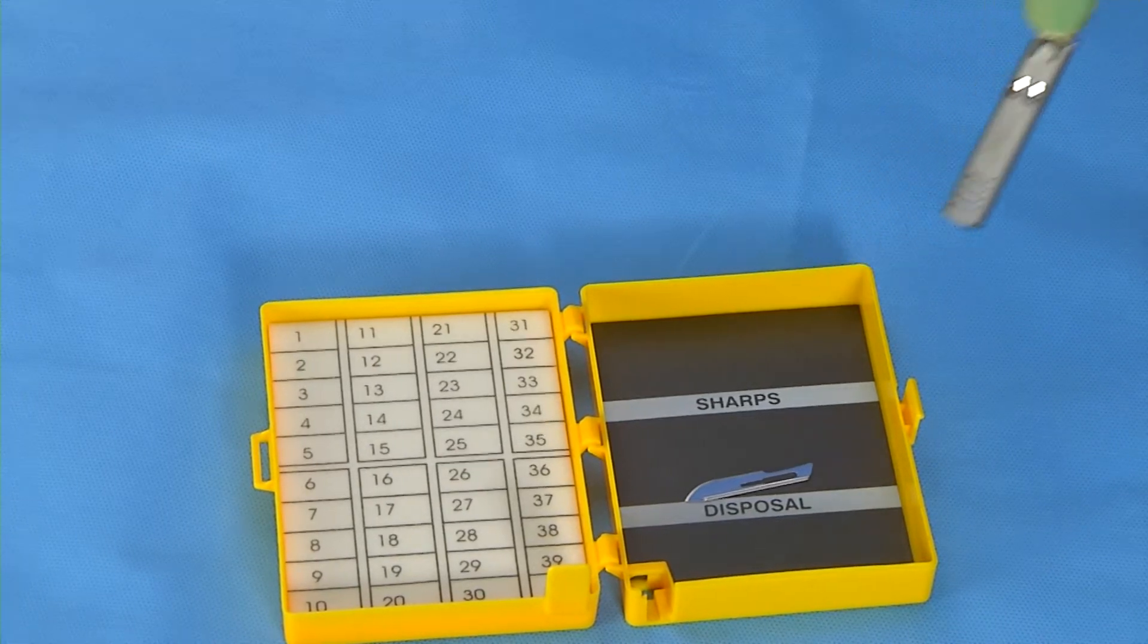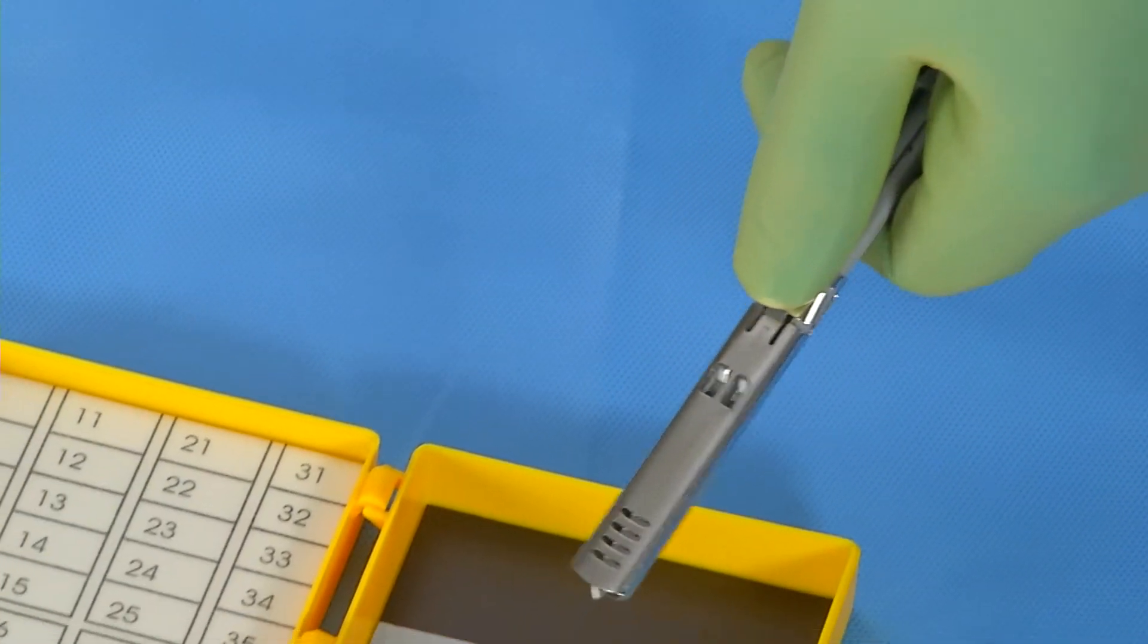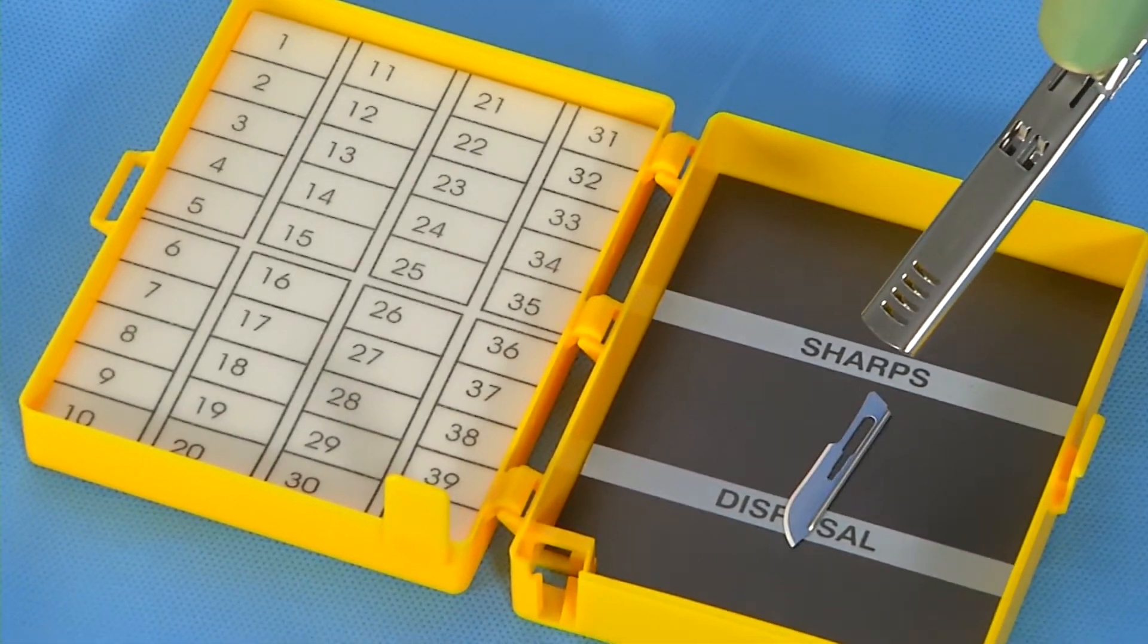To remove the blade with your left hand, move the shield forward and push the side locking button until the blade is released.